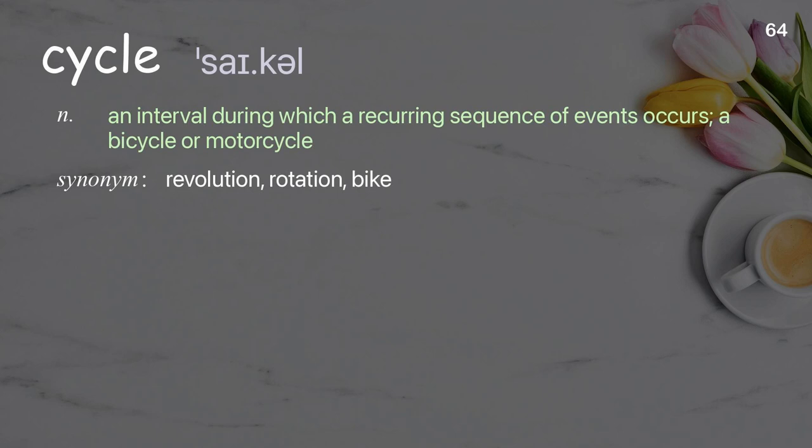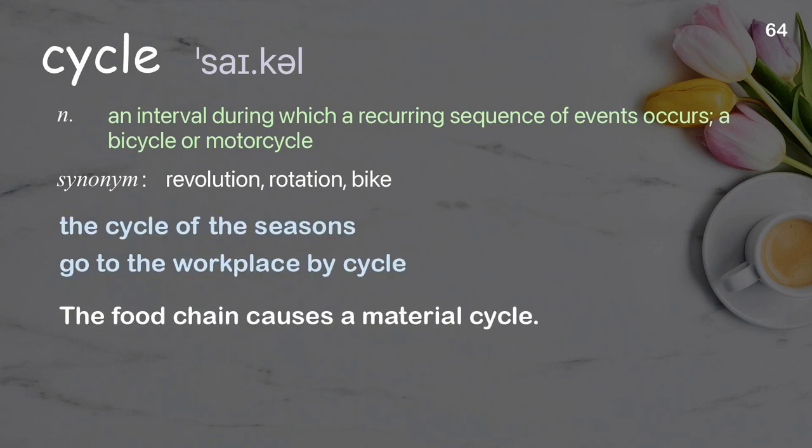Cycle: An interval during which a recurring sequence of events occurs; also a bicycle or motorcycle. Examples: The cycle of the seasons. Go to the workplace by cycle. The food chain causes a material cycle.